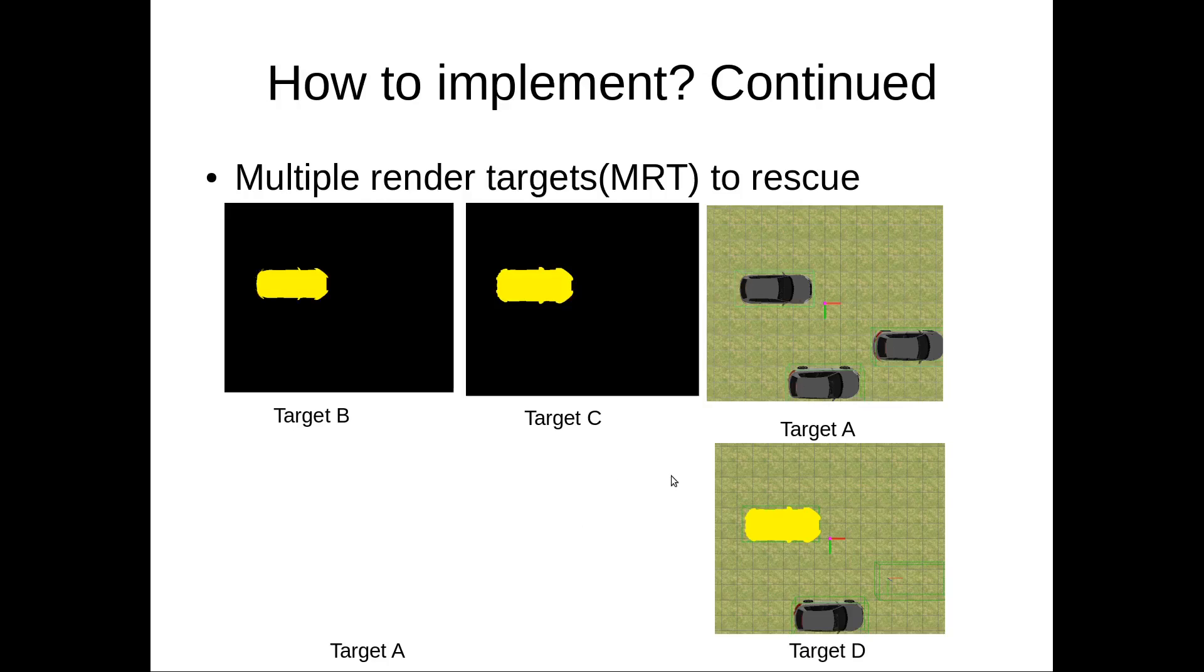And the next step is to implement another render target D. In render target D, we blend target C and target A. So when target C has a valid pixel, we use the pixel value for that pixel. Otherwise, we use the pixel from the background image, target A. So this is the final output. So this is a very simple binary blending.